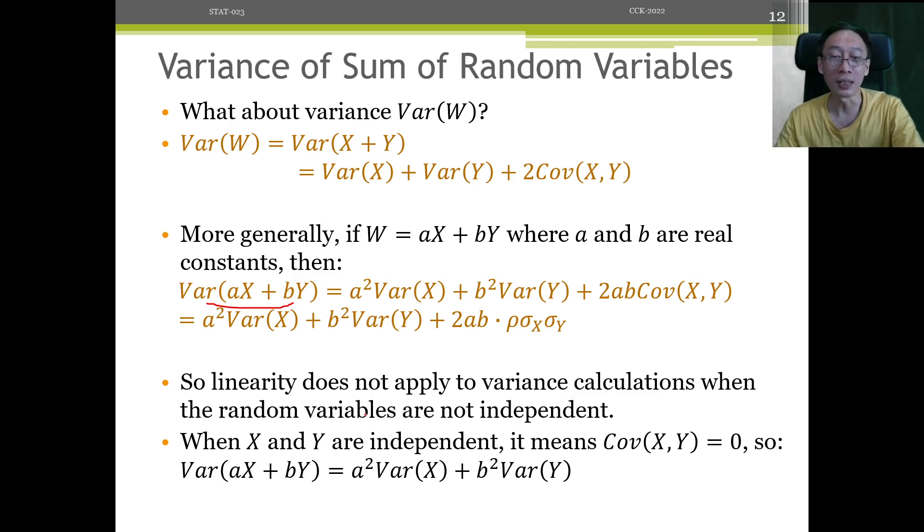And in the case when X and Y are really independent, because the question told us so, or in our project, we know that they are really not much of a dependence because of physical understanding or domain expertise. Then we know for sure that covariance of X, Y equals to 0. And so the last term drops off and we only have a squared times variance of X plus b squared times variance of Y.